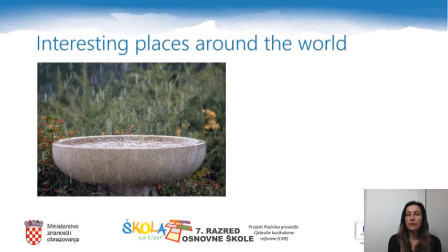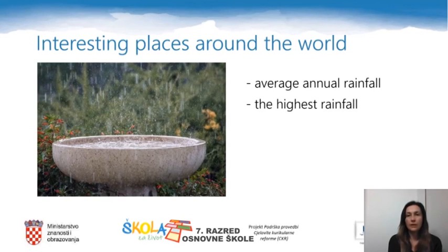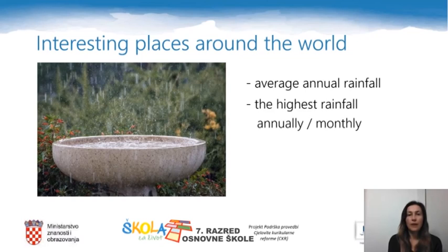When you read about some interesting places around the world, you can read about average annual rainfall. What is average annual rainfall? It is a typical quantity of rainfall in a certain area. The highest rainfall means it is above the average. Annually means in one year; monthly means in a month.